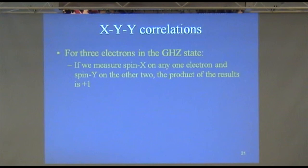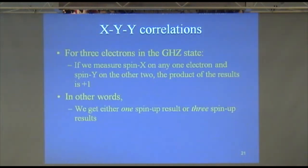But that has to be true anyway. No, it doesn't have to be true. Coming at that question, it doesn't actually have to be true. Because one possibility could be that one could get minus and the other two could get plus. In other words, we're going to get one spin-up result, exactly one spin-up result, or exactly three spin-up results. As opposed to two spin-up results and no spin-up results. That's what's going to happen. That's what quantum mechanics predicts.